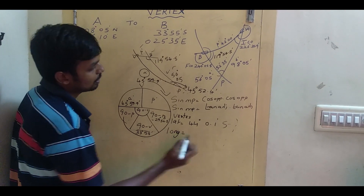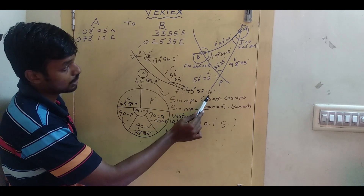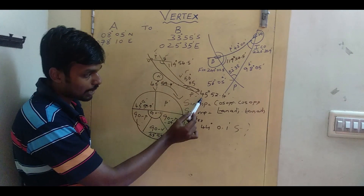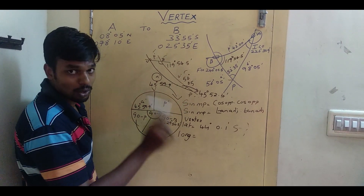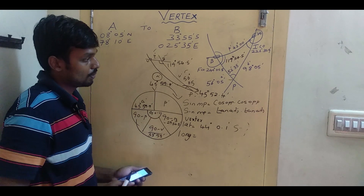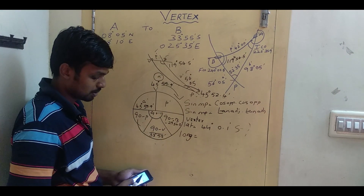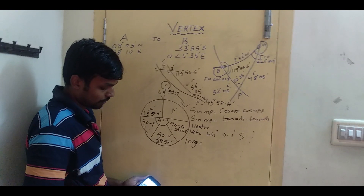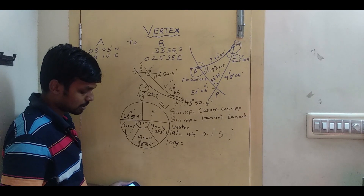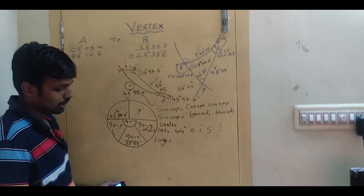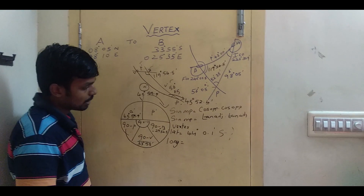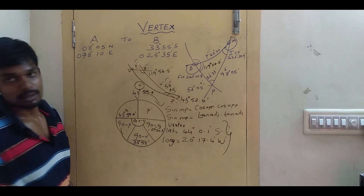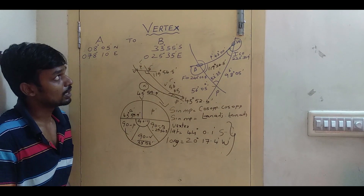For longitude: the P angle is 45° 52.4' and the longitude of B is 25° 35' East. It's going in a westerly direction, so subtract: 25° 35' − 45° 52.4' = −20° 17.4'. That is the vertex longitude. So the latitude and longitude of the vertex have been found using Napier's formula.